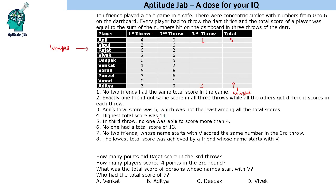We can apply the condition that the maximum score in the 3rd round is 4 and the maximum total is 14. Looking at the scores, Vipul has 9 points and Rajat, Vivek, Deepak — all these people cannot make 14. The only possible person who could make 14 is Varun: 5 plus 6 is 11, and 11 plus 3 would make 14. So Varun's 3rd throw is 3, giving a total of 14, and no one had a total score of 13.